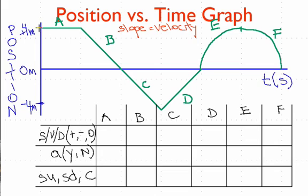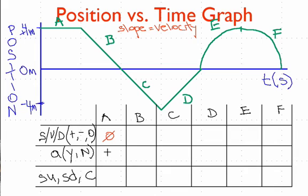Let's look at section A. This line has no slope, and therefore it has no velocity, and therefore it's not really moving, so we can't say it has a direction — we're just going to put a big zero in there. The A stands for accelerating, so we want to know: is it accelerating, yes or no? If it's accelerating, it would have to be changing its speed, which means it would have to be speeding up or slowing down, which means it would have to have a curved line. This is a straight line, so it has a constant velocity, and therefore no acceleration. And since it's constant, it's not speeding up or slowing down. This one is obviously not moving at all.